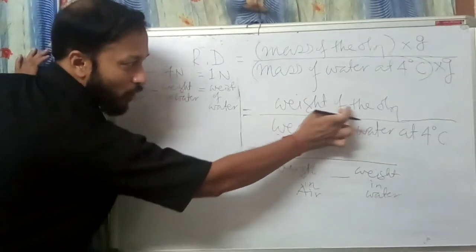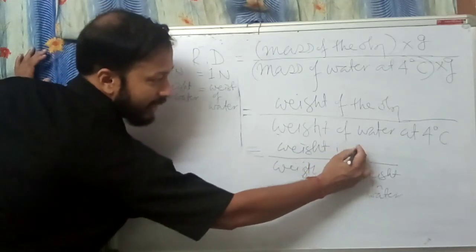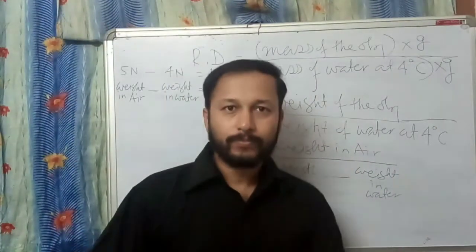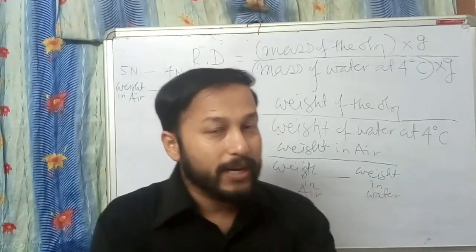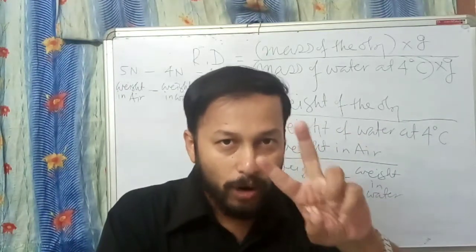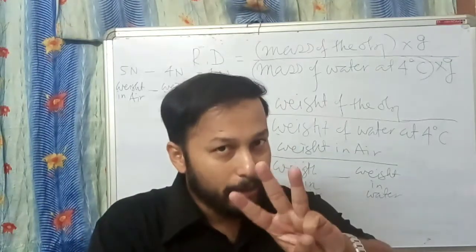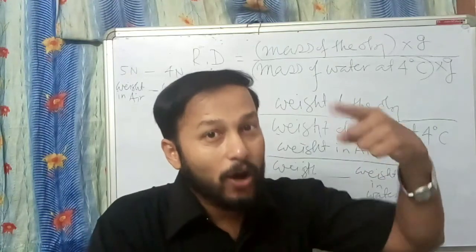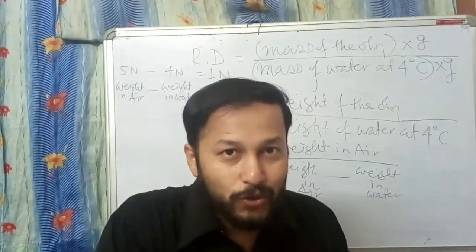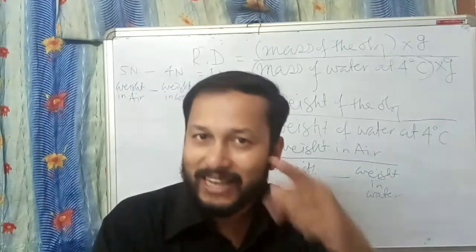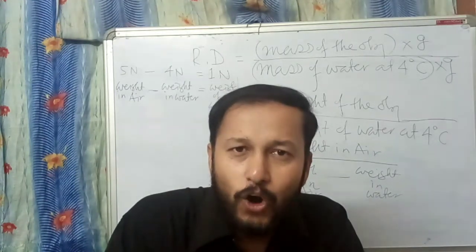So we have four formulas to find relative density. Formula 1: relative density equals density of the object by density of water. Formula 2: relative density equals mass of the object by mass of water. Formula 3: relative density equals weight of the object by weight of water. Formula 4: relative density equals weight of the object in air by (weight of the object in air minus weight of the object in water). We use these four formulas to find the relative density of any solid object.